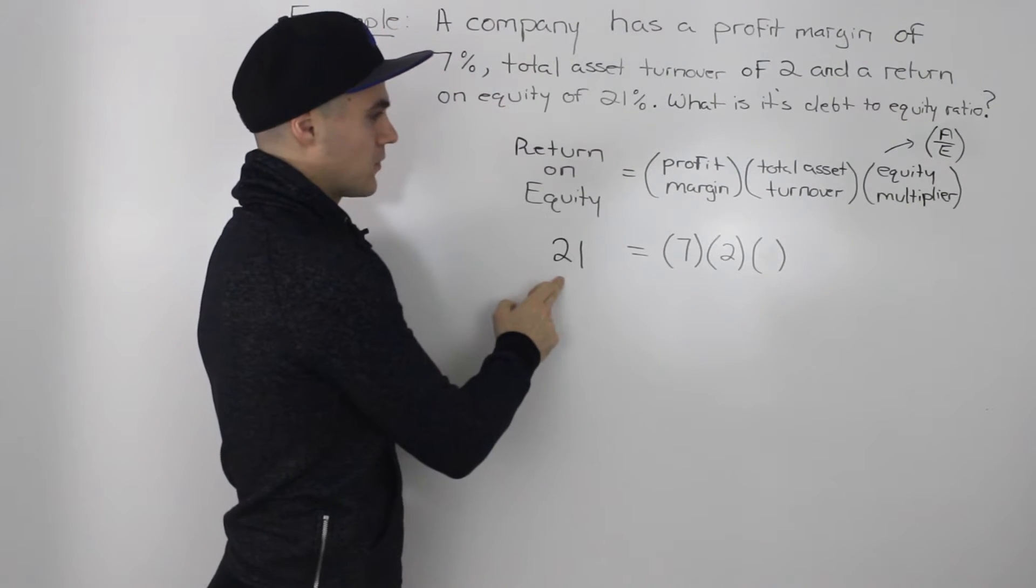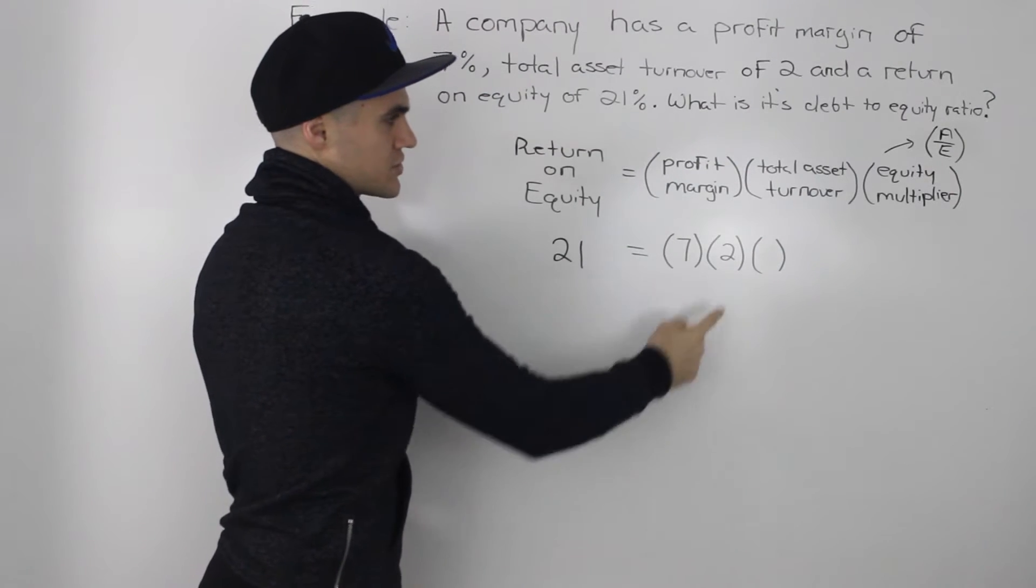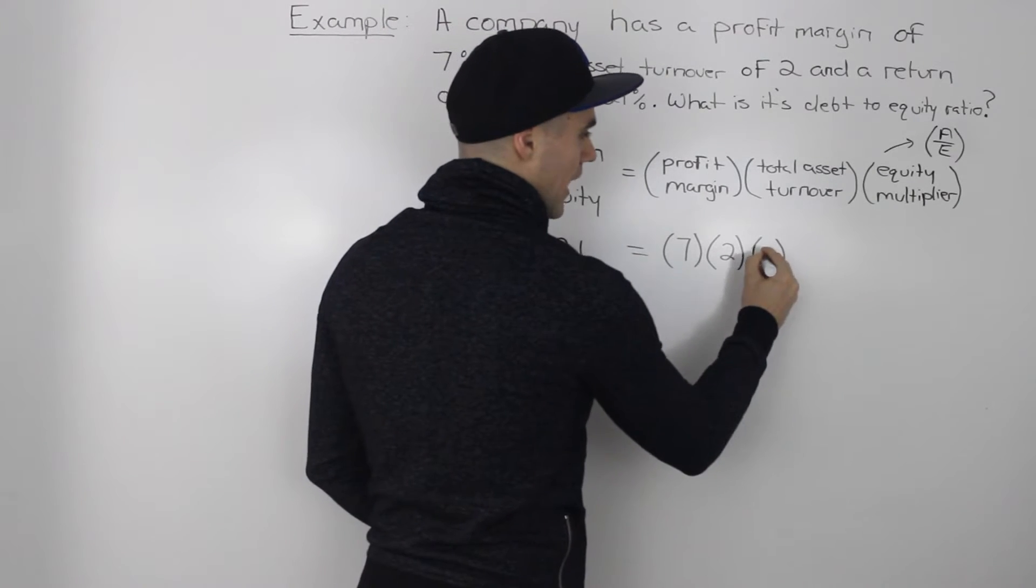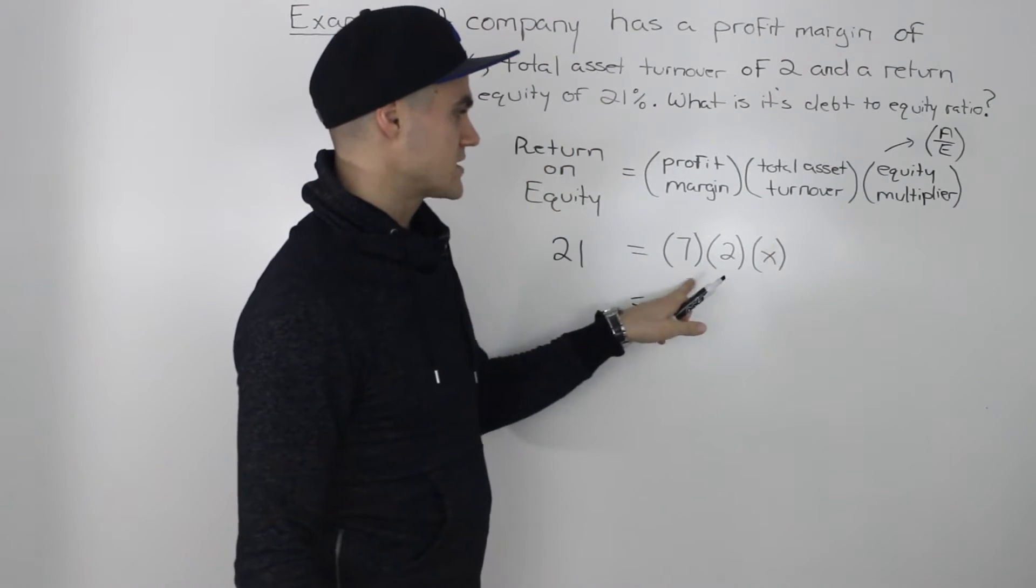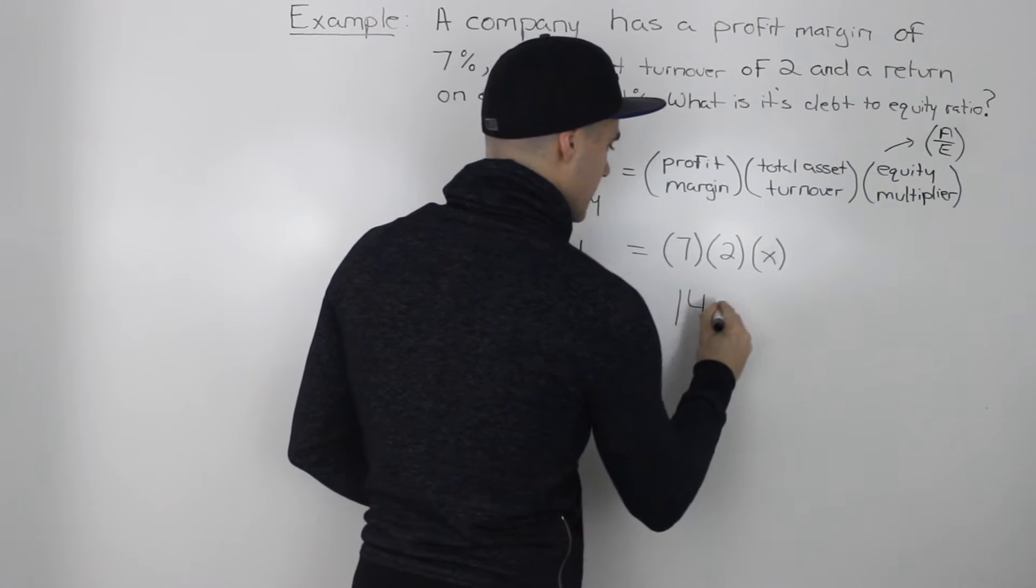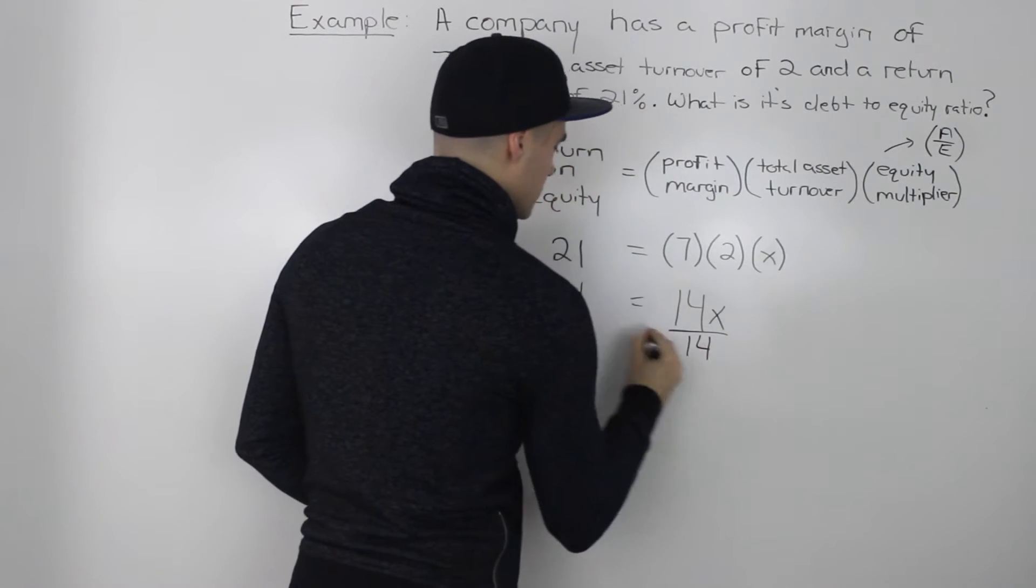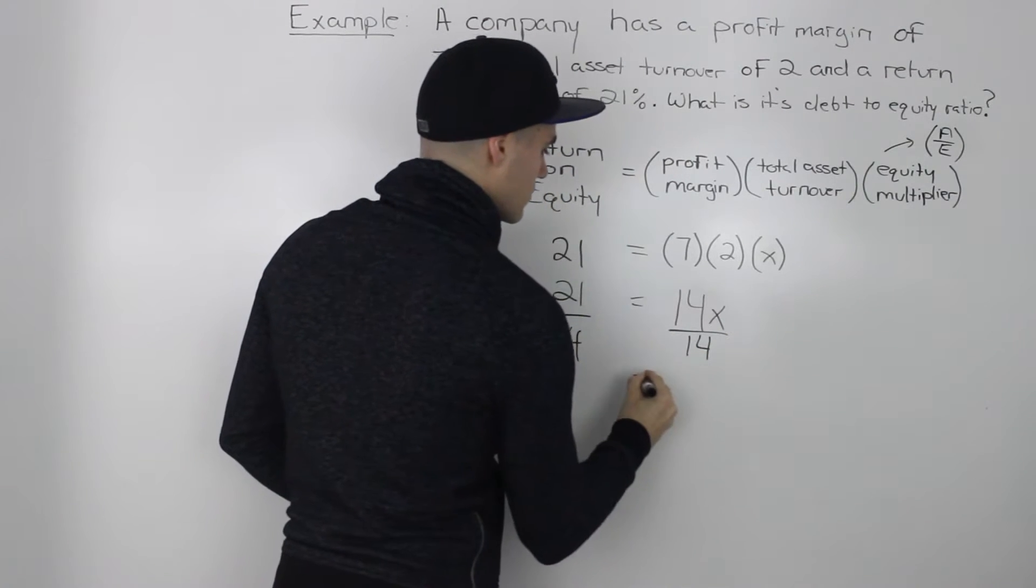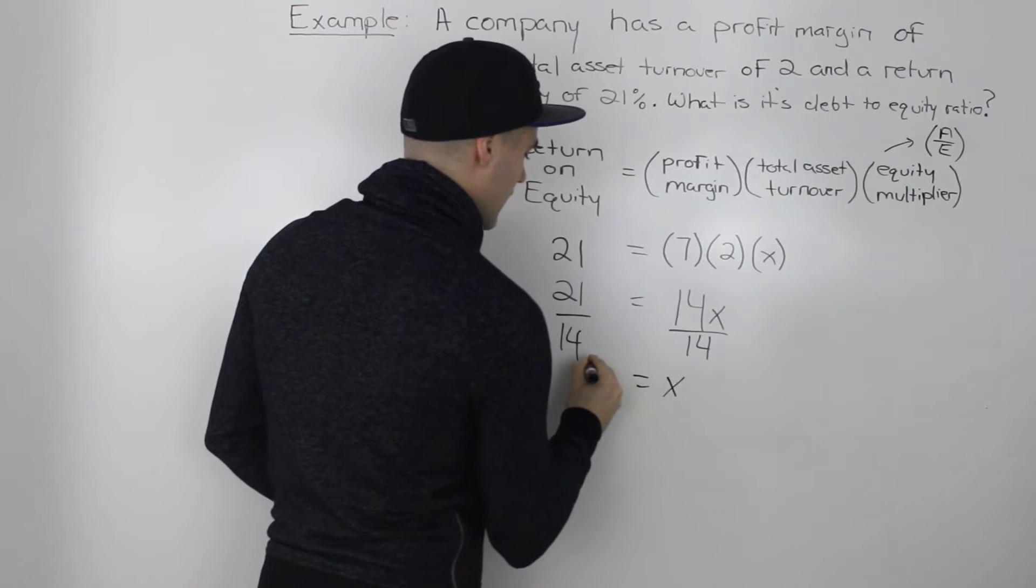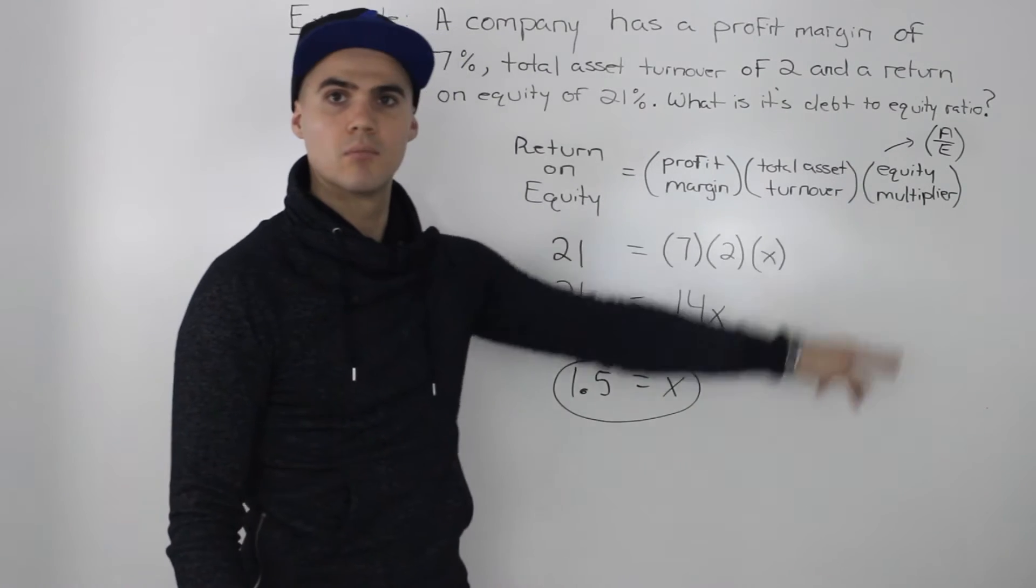So the return on equity is equal to 21%. Profit margin is 7%. Total asset turnover is 2%. Equity multiplier we're finding, so let's just put a variable X here. So then working with this right side, multiplying everything out, we get 14X, and this is still here, 21. And then to isolate for X, we just divide both sides by 14. So our X is equal to 1.5. So 1.5 represents our equity multiplier.